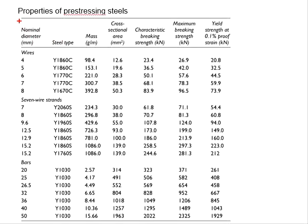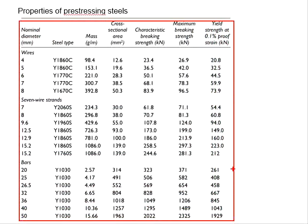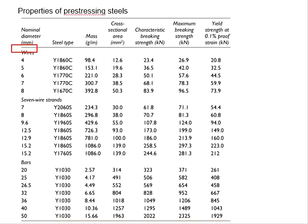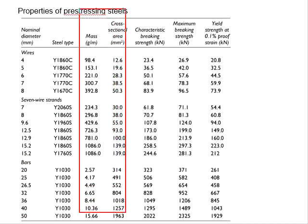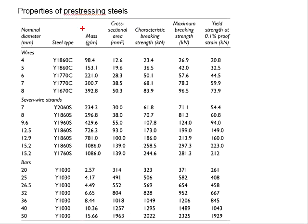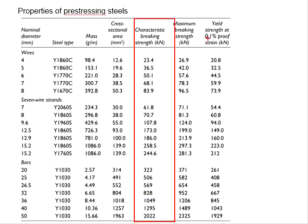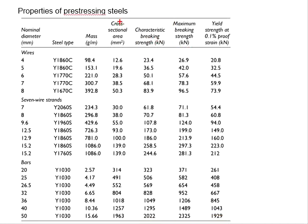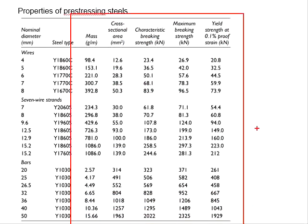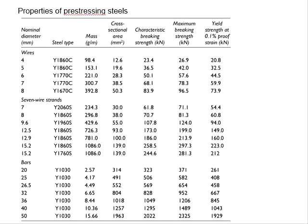This is another set of the properties of the pre-stressing steel. You have wires of different diameters, strands of different diameters, and also bars of different diameters. The physical properties are given here, which include the mass and also cross-sectional area. The characteristic breaking strength and also the yield strength are given here. All these properties are important for the design of pre-stressing members.